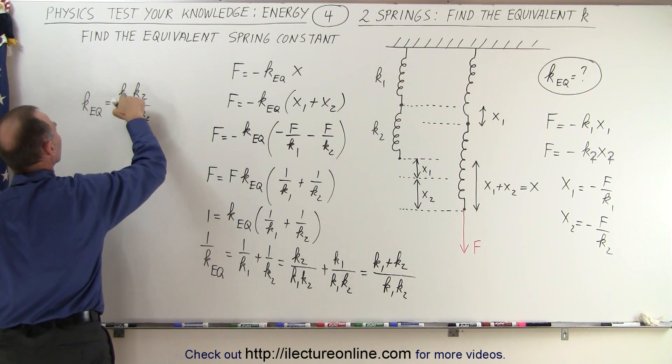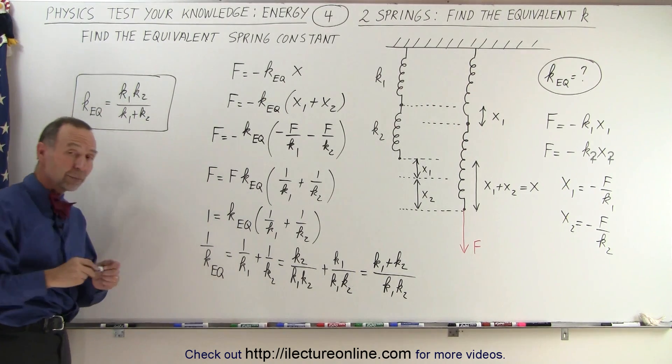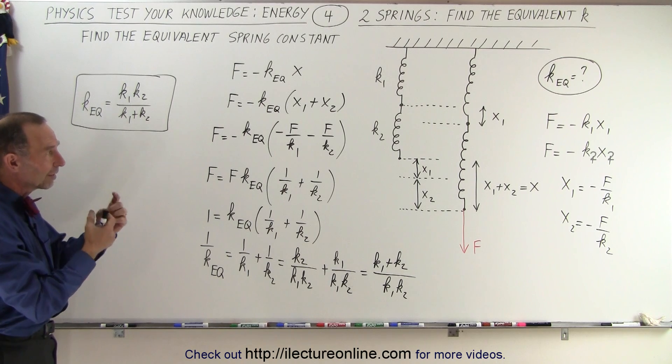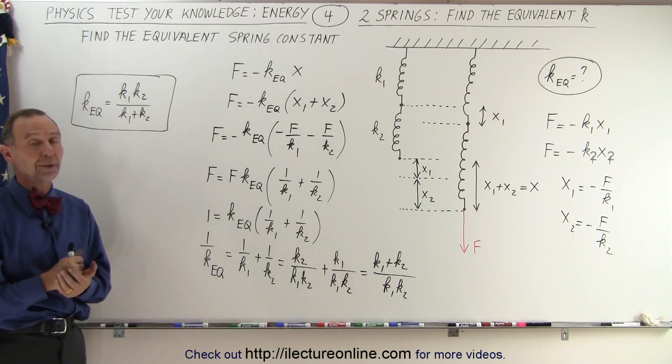That's a funny looking k, there we go. And so here we have found the equivalent spring constant for a system where we have two springs attached one after the other in series, and that is how it's done.